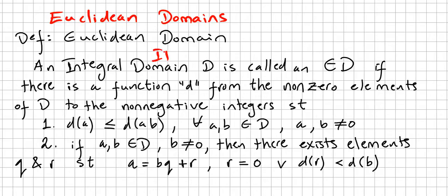We are going to see the definition of an Euclidean domain. An integral domain D is called an Euclidean domain if there is a function d from the nonzero elements of D to the non-negative integers such that: first, d(a) is less than or equal to d(ab) for all a, b in D, where a and b are different from zero.